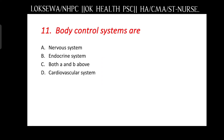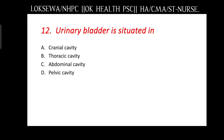Question number 11: body control systems are — the nervous system, the endocrine system, both A and B above, or cardiovascular system? The answer is C, both A and B above. Next: urinary bladder is situated in — cranial cavity, thoracic cavity, abdominal cavity, or pelvic cavity? The answer is D, pelvic cavity.